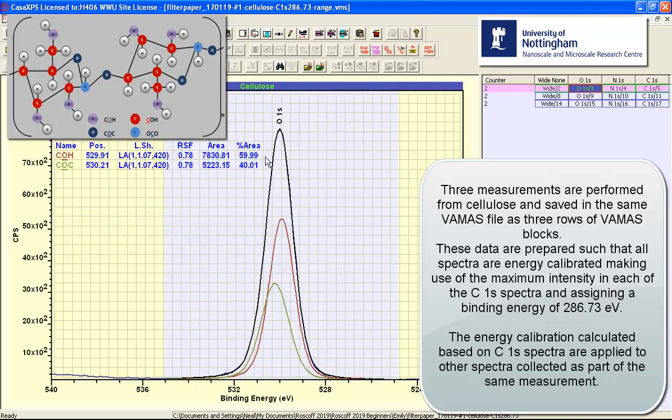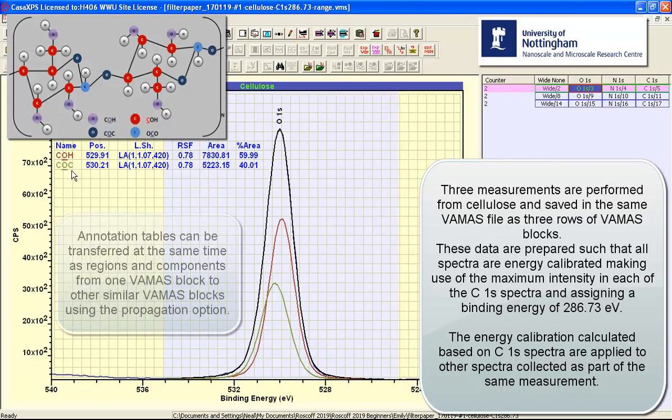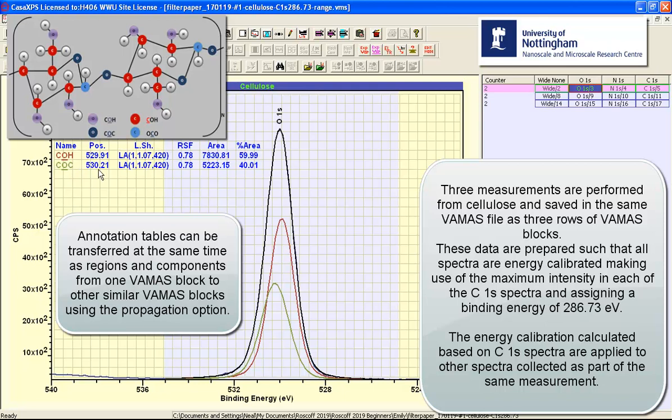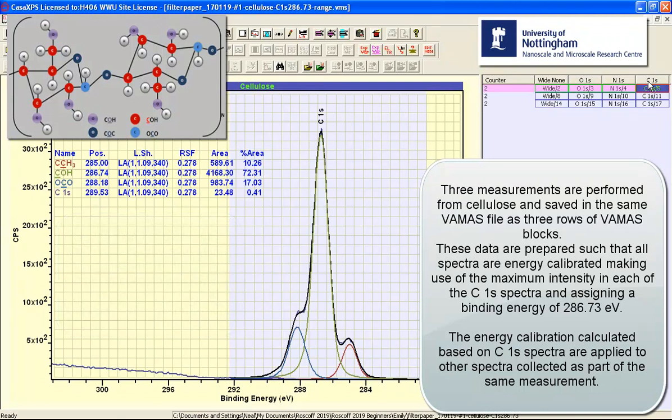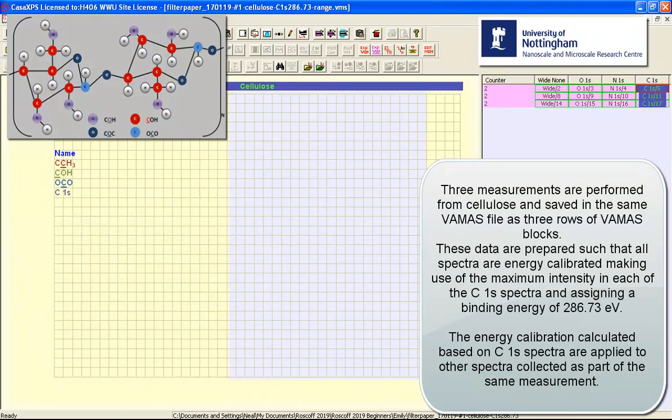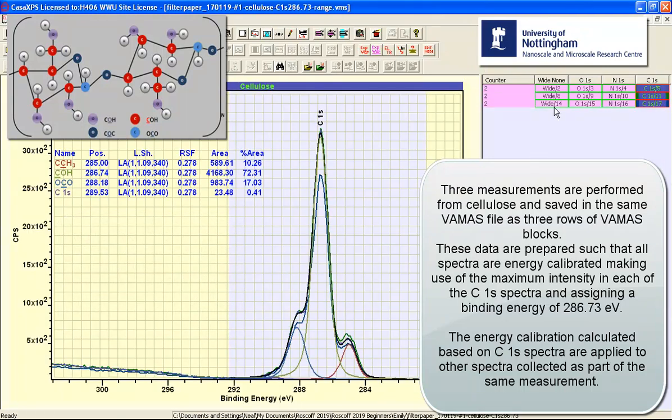The oxygen has a pair of peaks that represent the two different bond states for oxygen within this cellulose material, and also the carbon. In addition, these data have all been calibrated in terms of energy using the maximum intensity within the carbon 1s interval. So all of these data are energy calibrated so that we have the CO bond of C1s at 286.7.